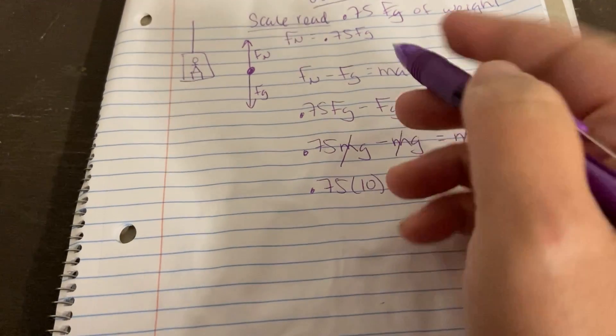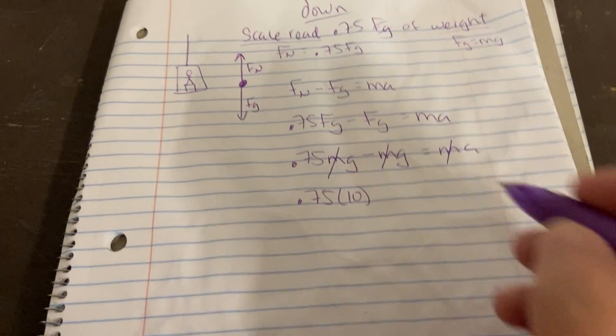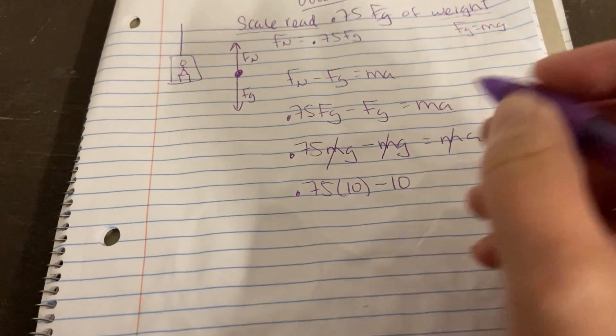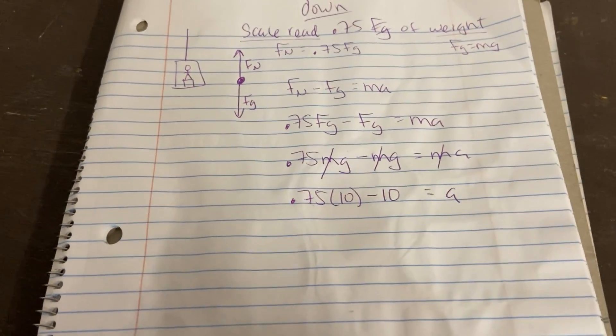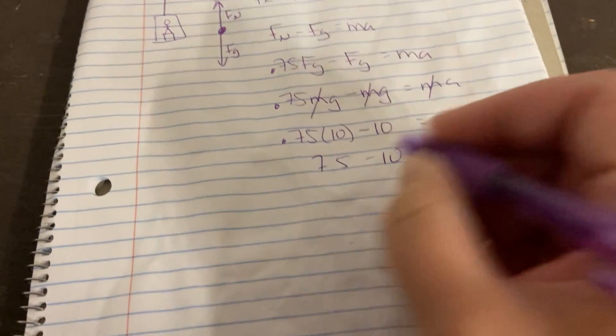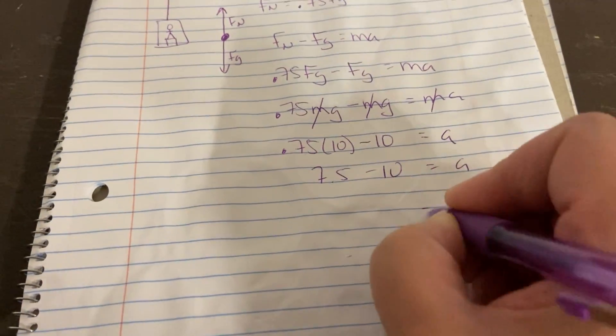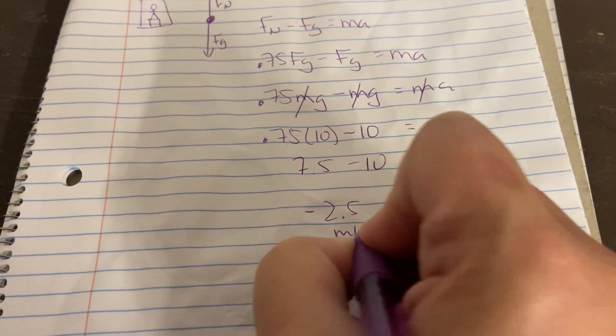Alright. So I got 0.75 times 10 minus 10 equals A. So when I solve this, you get 7.5 minus 10 equals A. So the acceleration is negative 2.5 meters per second squared.